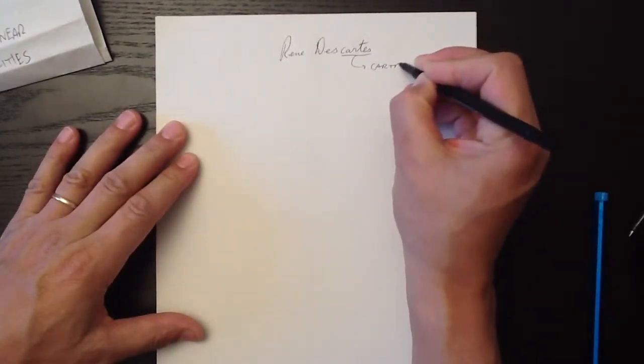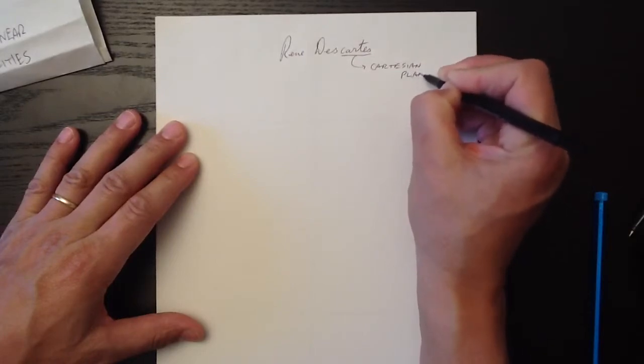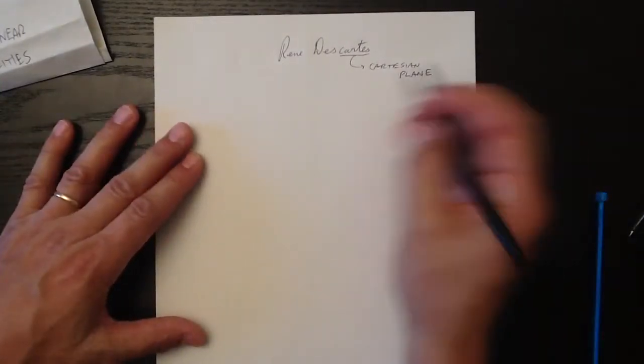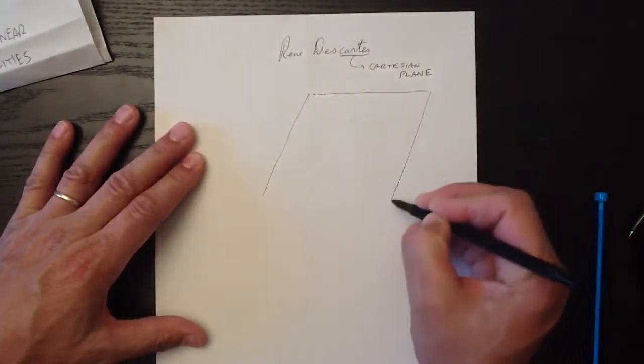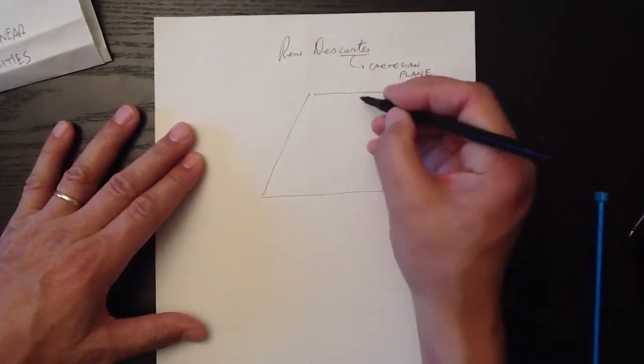So he invented the Cartesian plane, and as you know a plane is just a flat expanse of some kind. The Cartesian plane, if you take the universe and you map it out as a two-dimensional plane like this, he said that